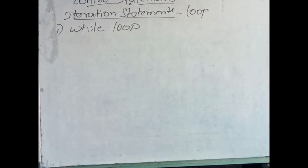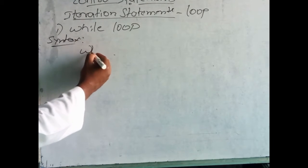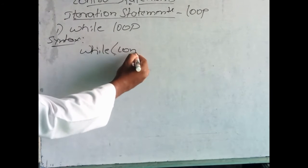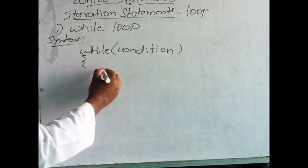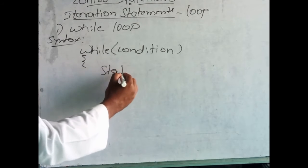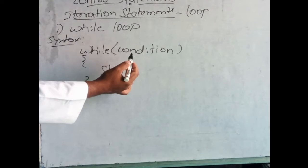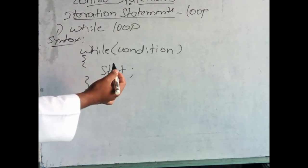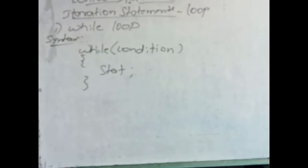In the while loop, a single statement or a set of statements are executed repeatedly until the condition is satisfied. The syntax of the while loop uses the keyword 'while', followed by a condition, and within the block there are statements. If the condition is true it will execute; otherwise it will not execute — until the condition is true it is executed repeatedly.